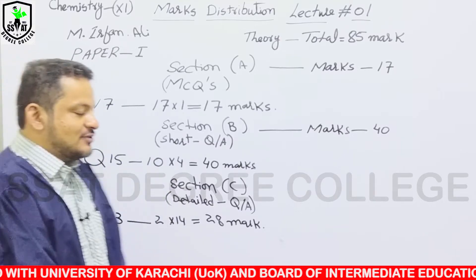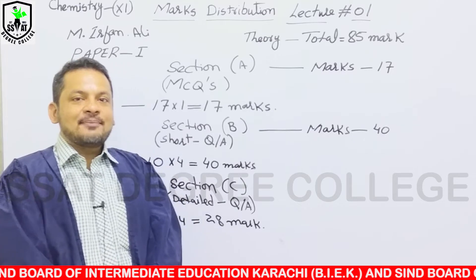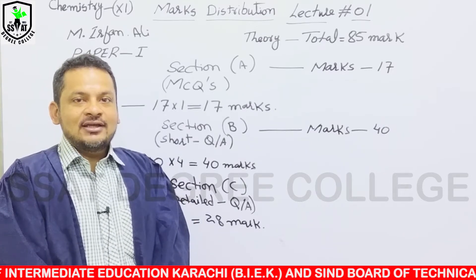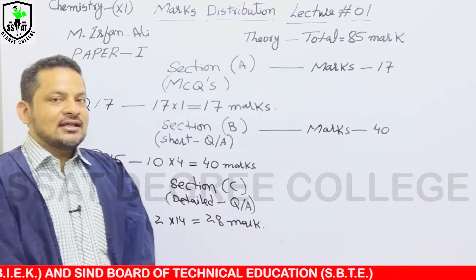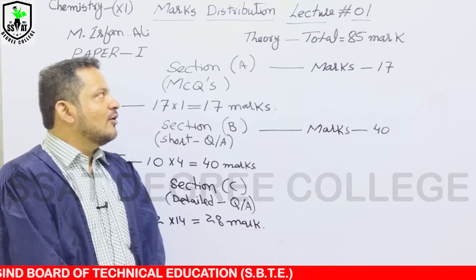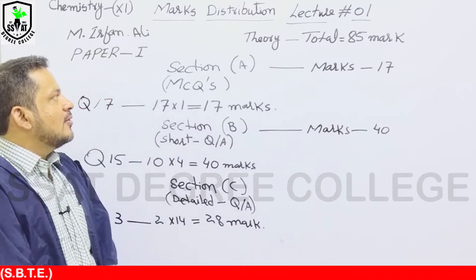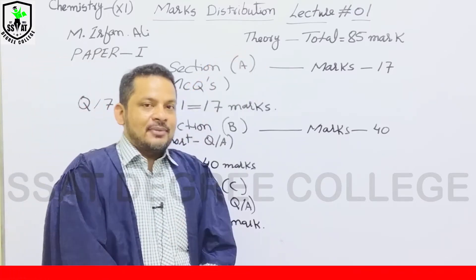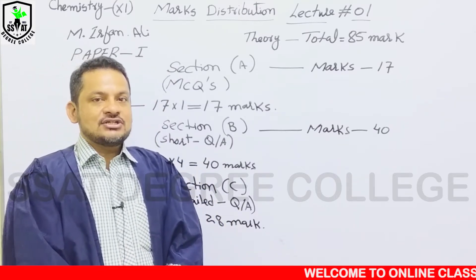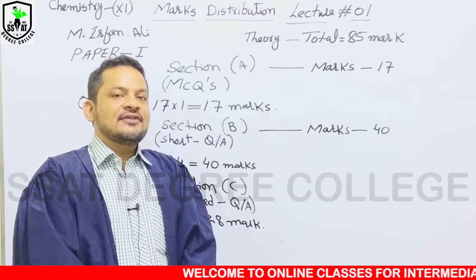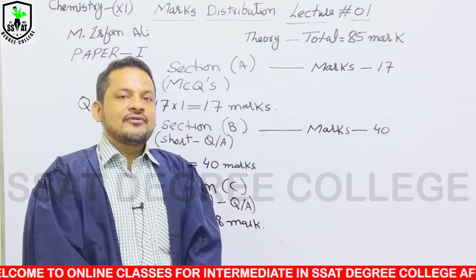Chemistry में सबसे पहले Marks Distribution की बात आती है — कि आपका Examination Paper का Pattern क्या होगा। Paper दो हिस्सों में होता है: Theory Examination जो 85 Marks का होता है, और Practical Examination जो तकरीबन 15 Marks का होता है।